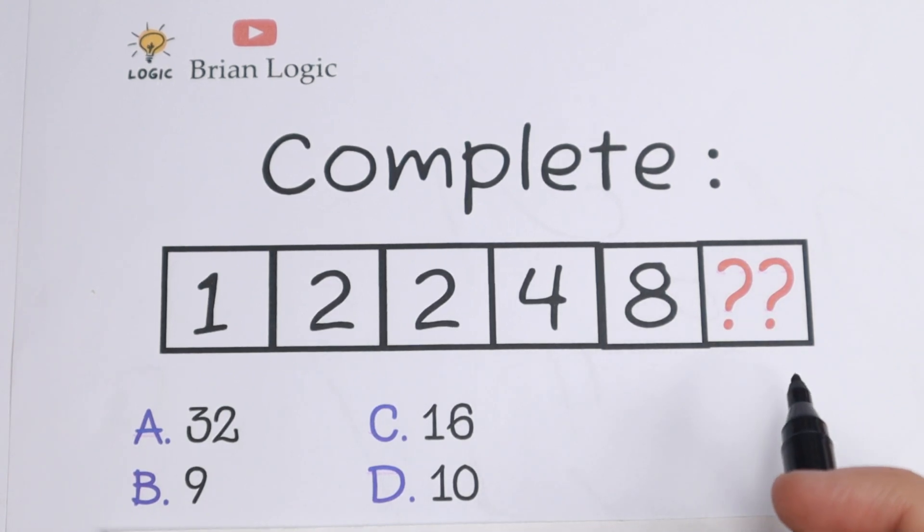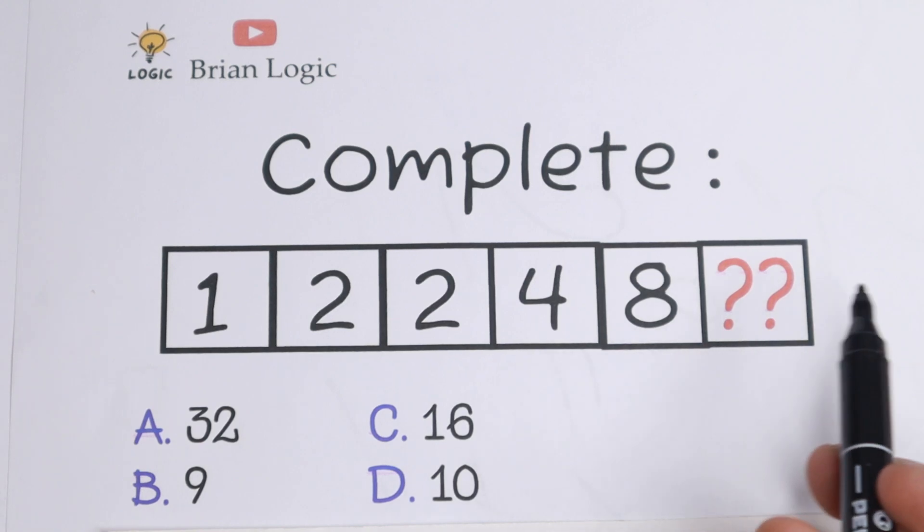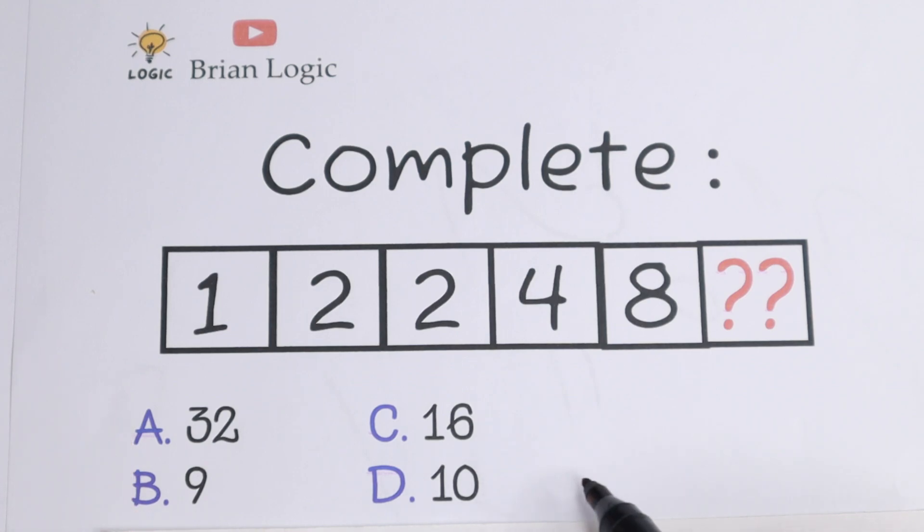In this video we are going to solve this interesting logical reasoning problem. We need to complete this numeric series: 1, 2, 2, 4, 8, and we need to find the last number. Right here in the bottom we have several options: 32, 9, 16, and 10.